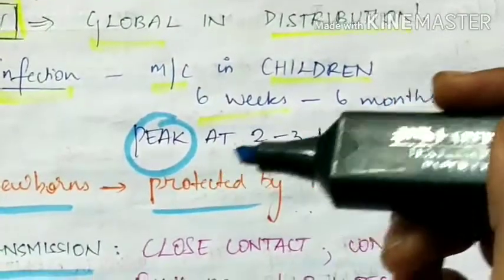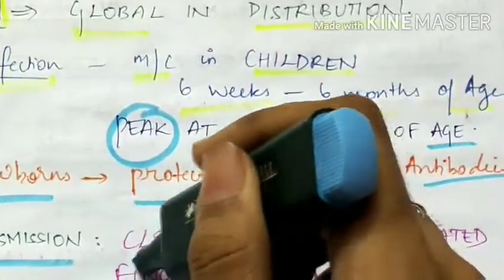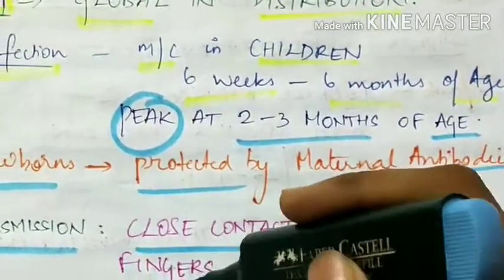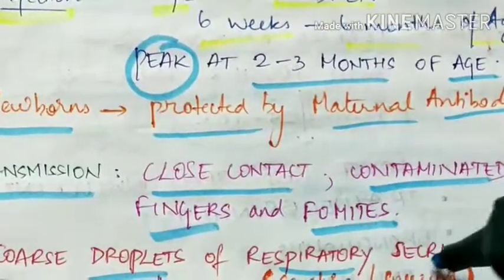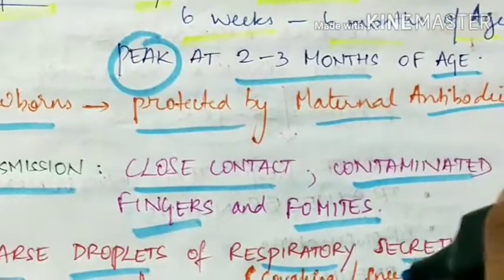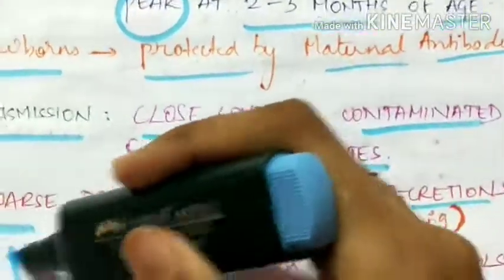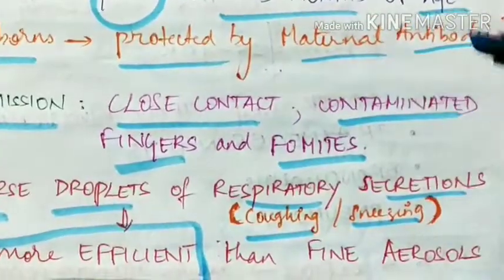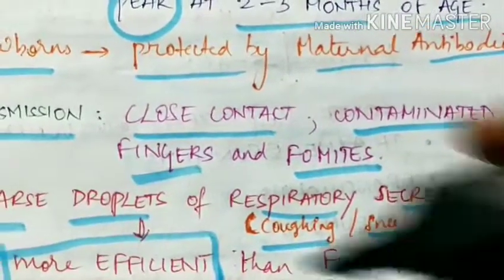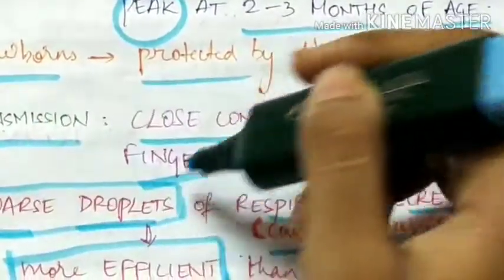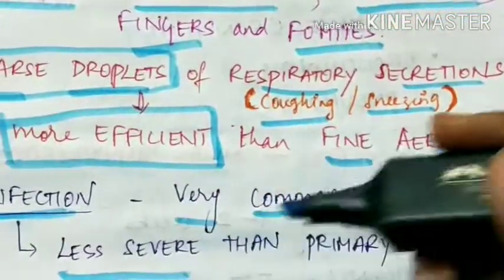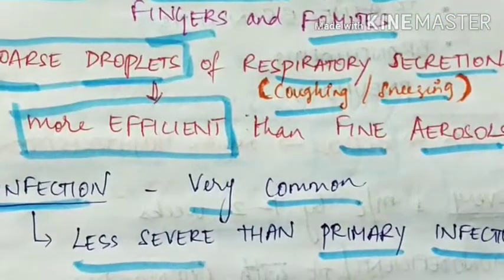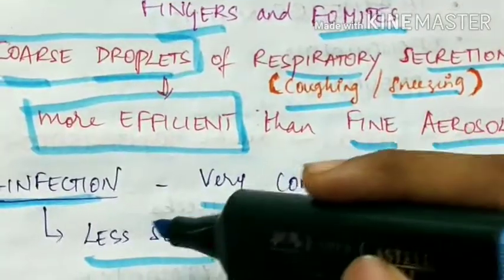Transmission of respiratory syncytial virus is by close contact, contaminated fingers, and fomites. Coarse droplets of respiratory secretions from coughing and sneezing are more efficient in transmitting the infection than fine aerosols. Re-infection is very common with respiratory syncytial virus, but re-infection is less severe than primary infection, so subsequent infections are very mild.